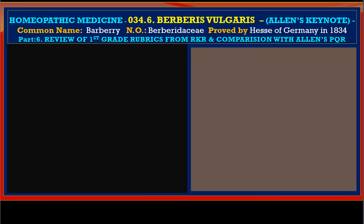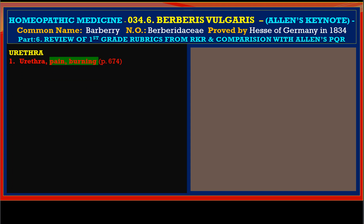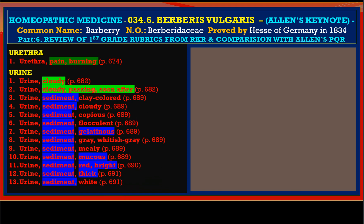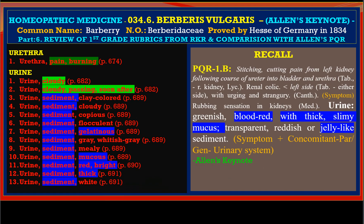Pain tearing is also there. In the urethra we find pain burning — that is urethritis. In urine, cloudy, cloudy passing soon after, and then there are sediments: clay colored, cloudy, copious, flocculent, gelatinous, gray whitish, mealy, mucus, red, bright, thick, and white — every kind of sediment is present. We find this also in PQR1B of Allen's keynote: red blood with thick slimy mucus, reddish jelly-like sediment. Gelatinous is jelly-like sediment. So we find again a good representation in the urine and also in Allen's keynote.